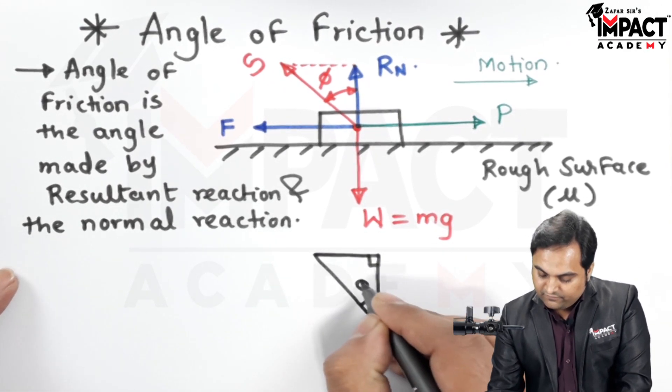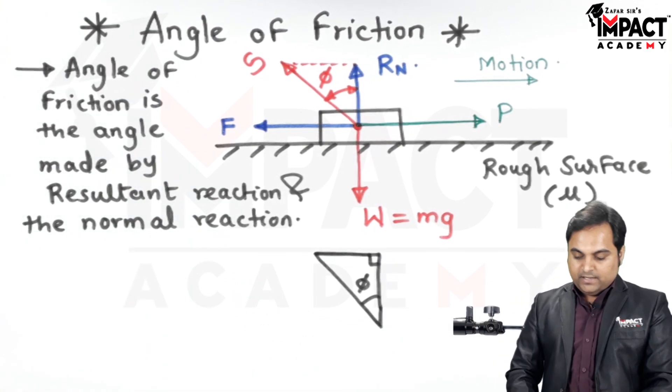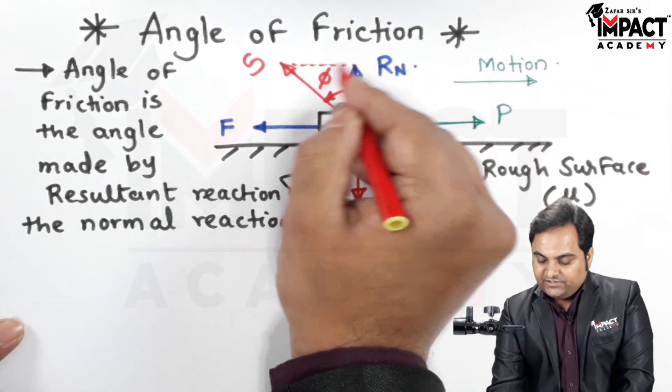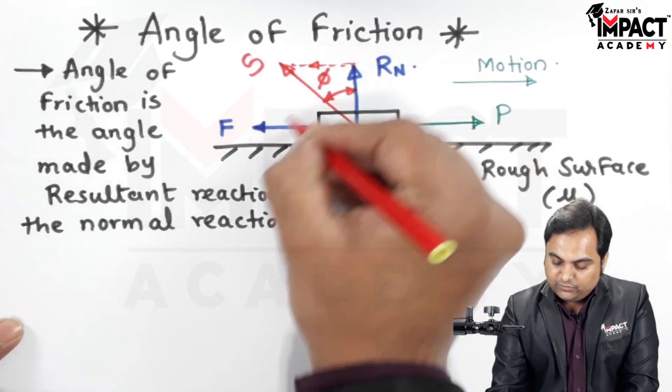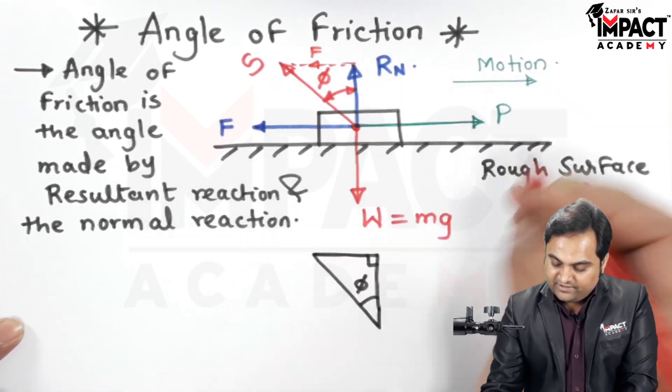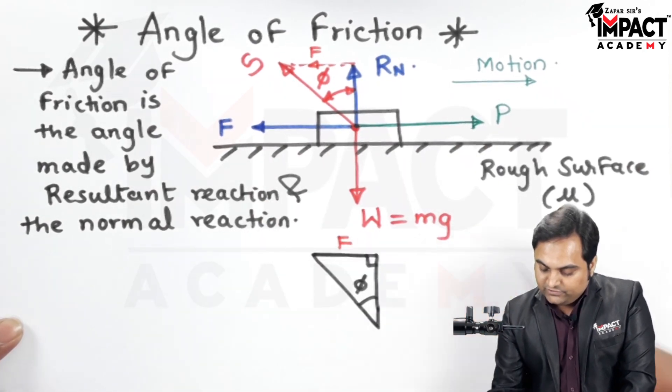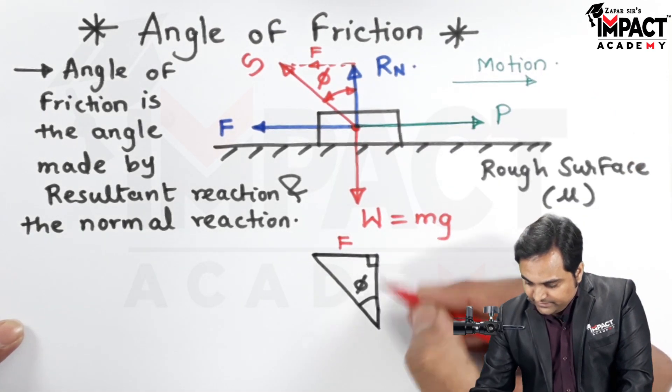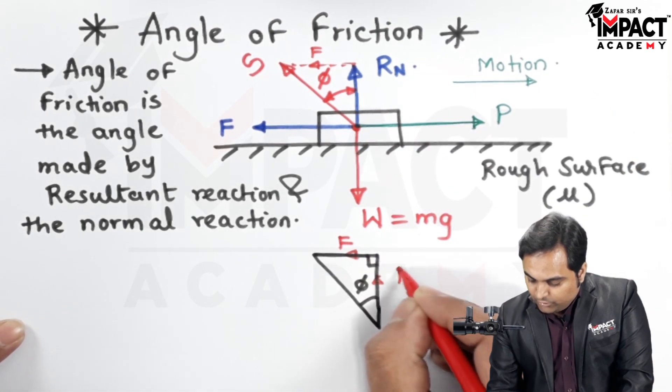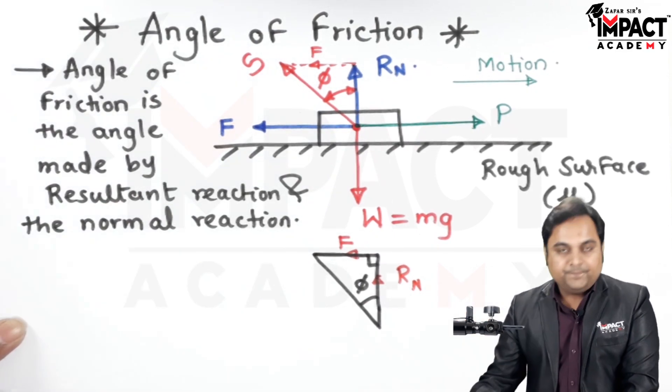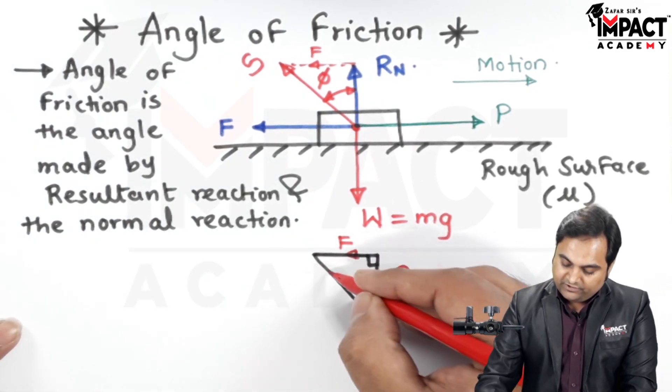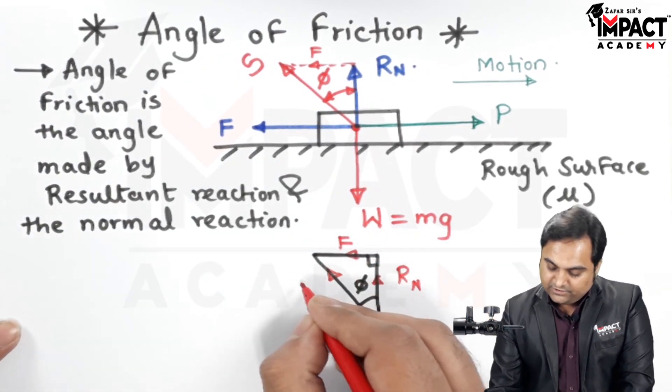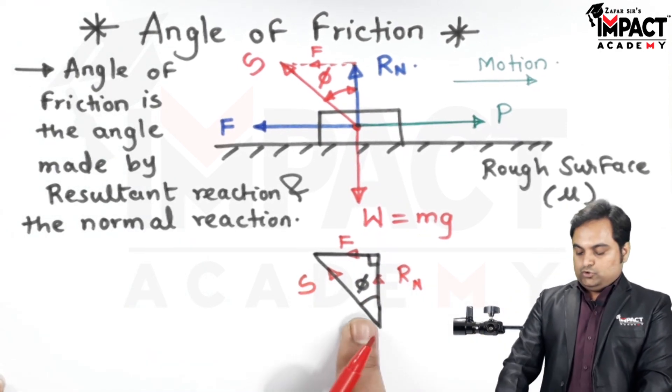Here is phi the friction angle and the line which I have extended here it is having the same value as the force of friction which is F. So this side of the triangle shows the friction force F and the vertical side it shows the normal reaction Rn.